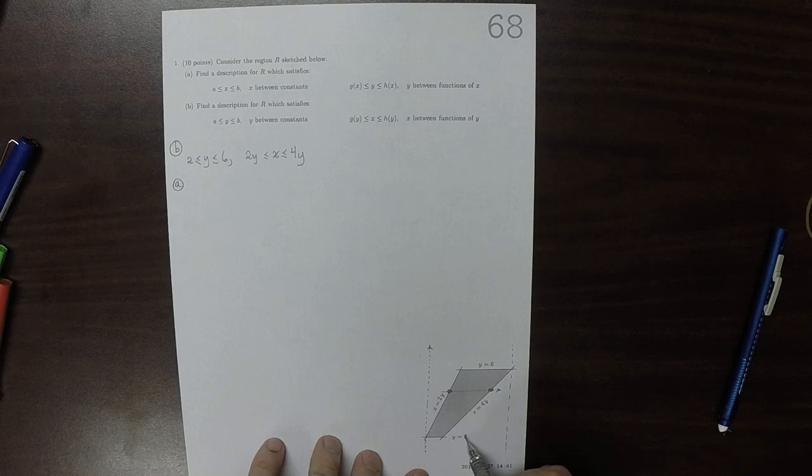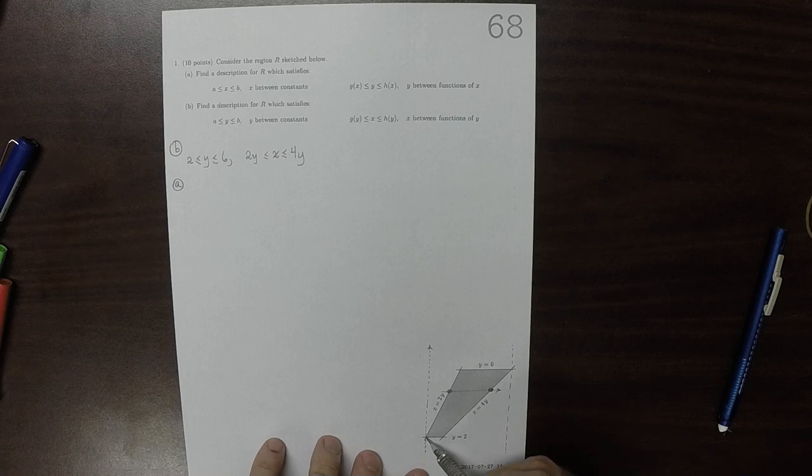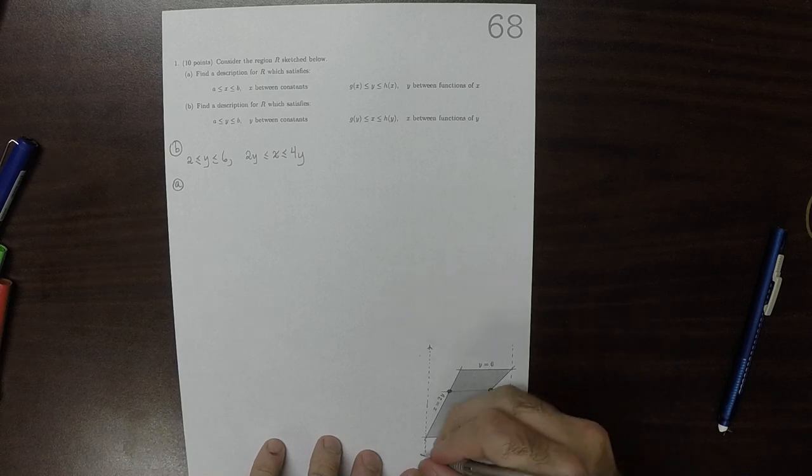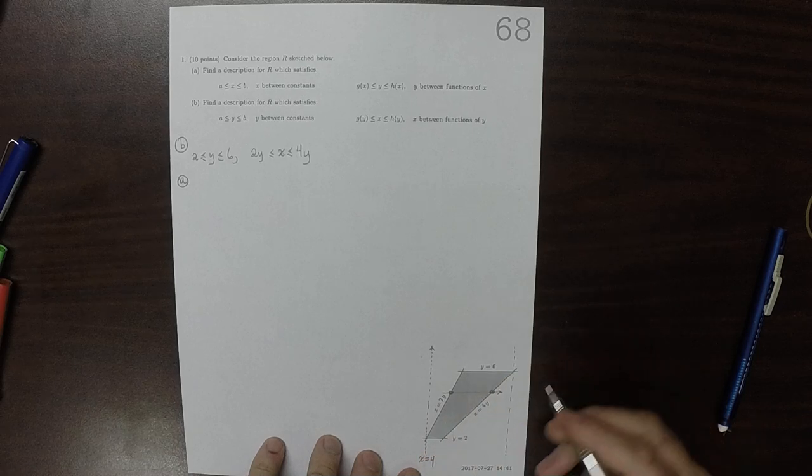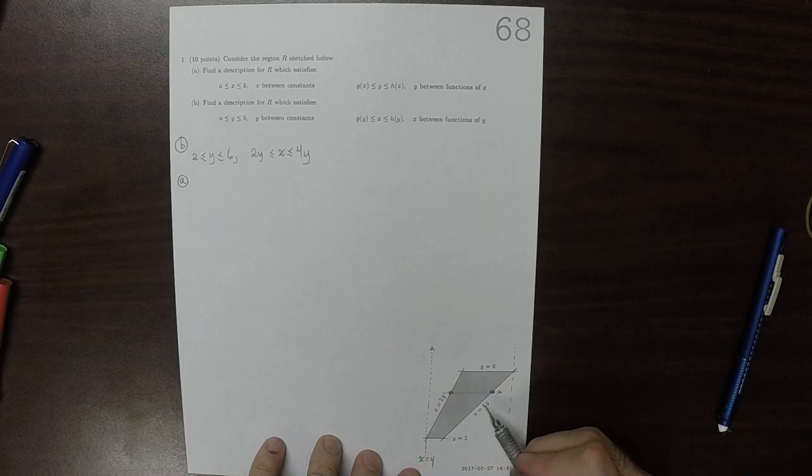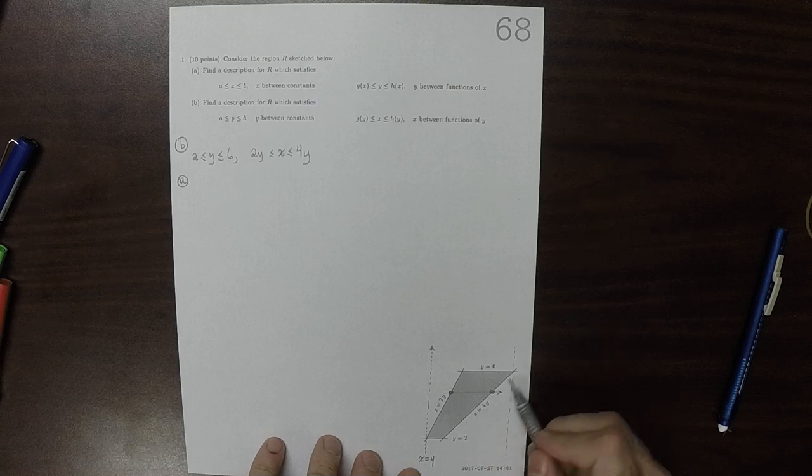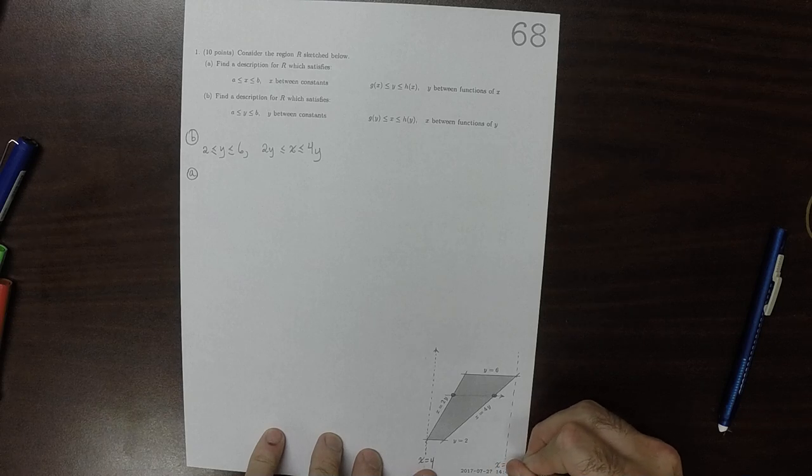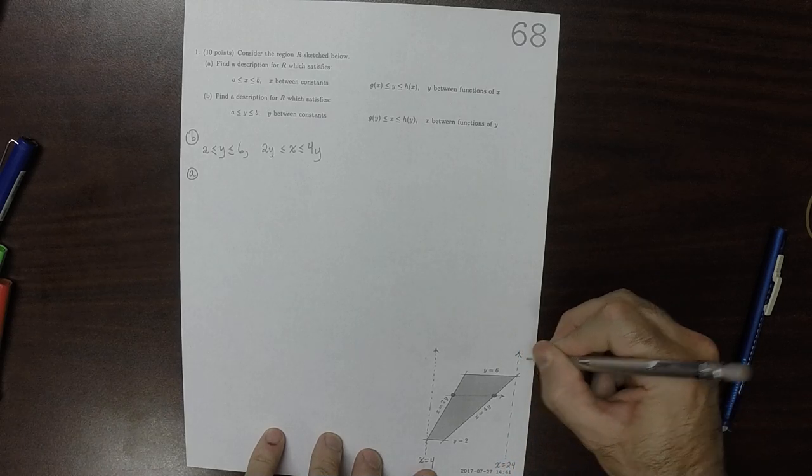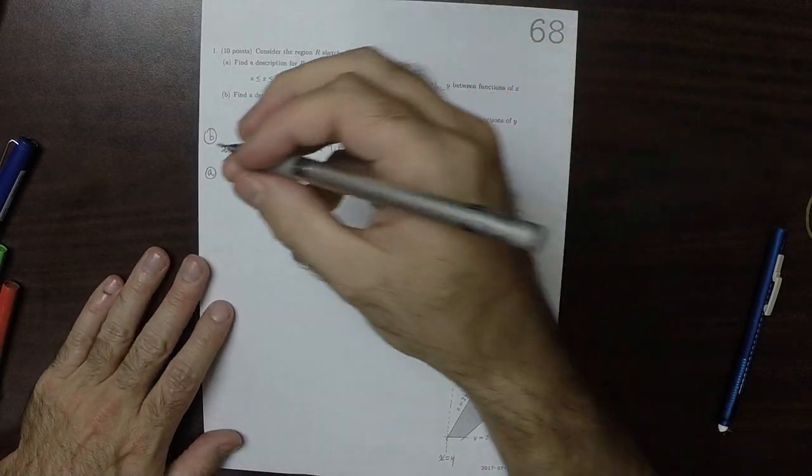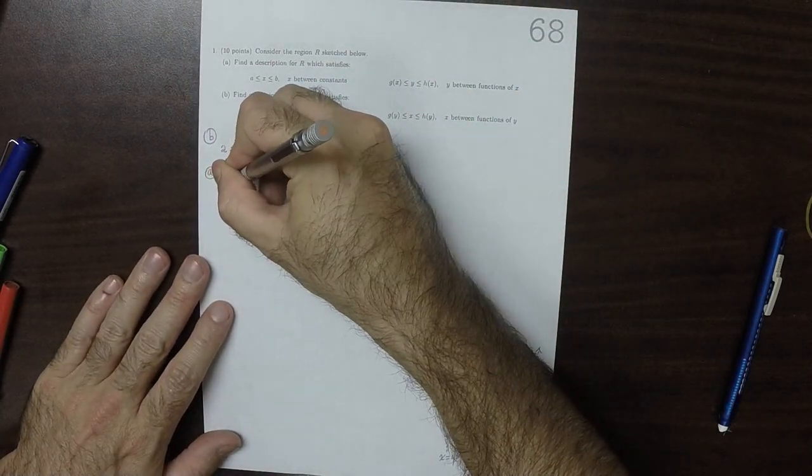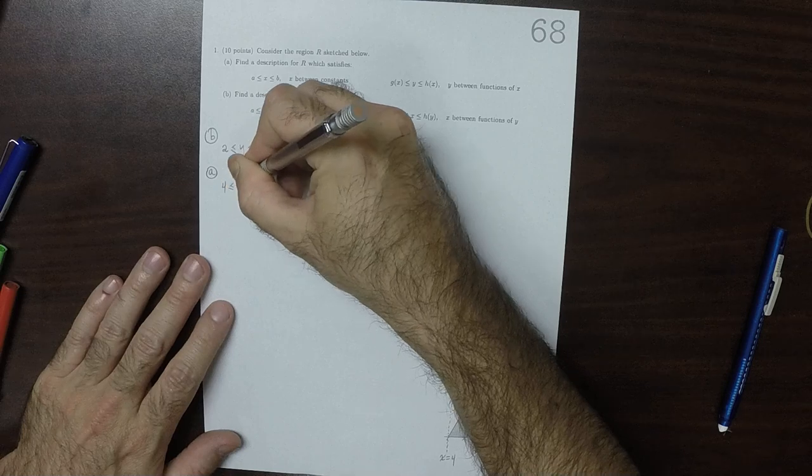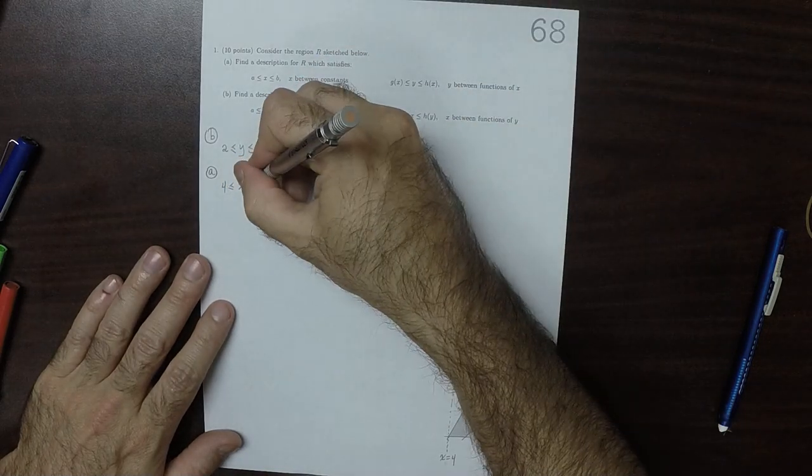This is at Y is 2 and X is 2Y, so this here would be at X is 4. And this is Y is 6 and X is 4Y, so that would be X is 24. The constant X bounds are 4 less than or equal to X less than or equal to 24.